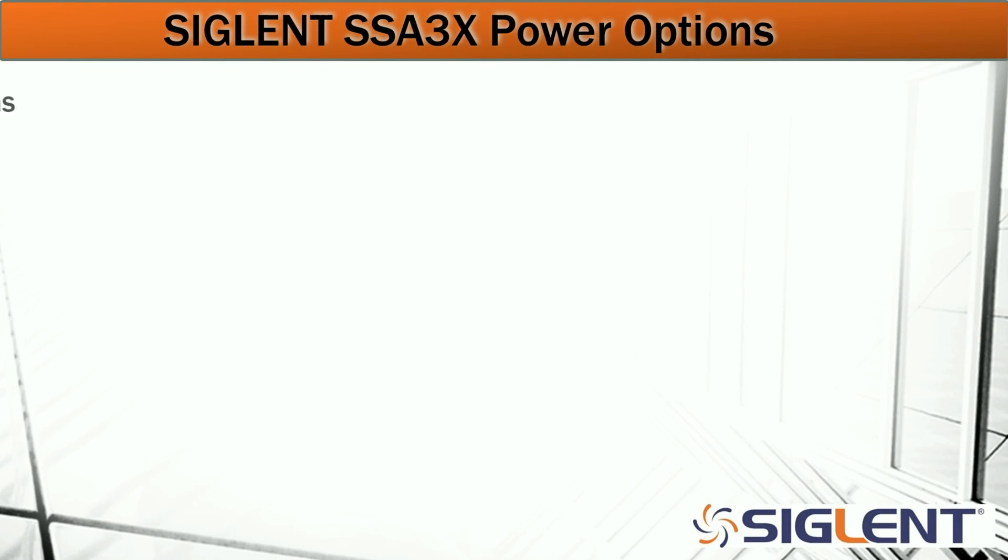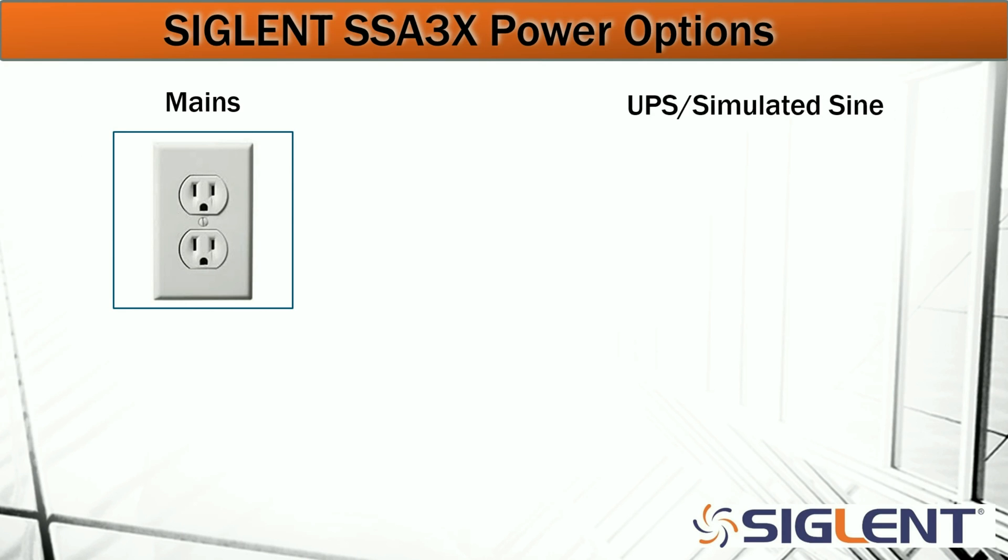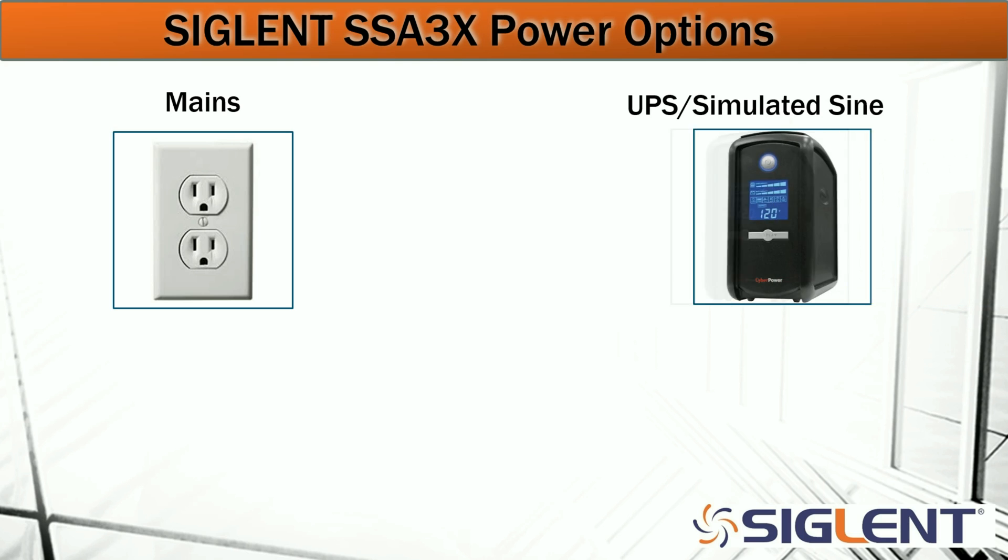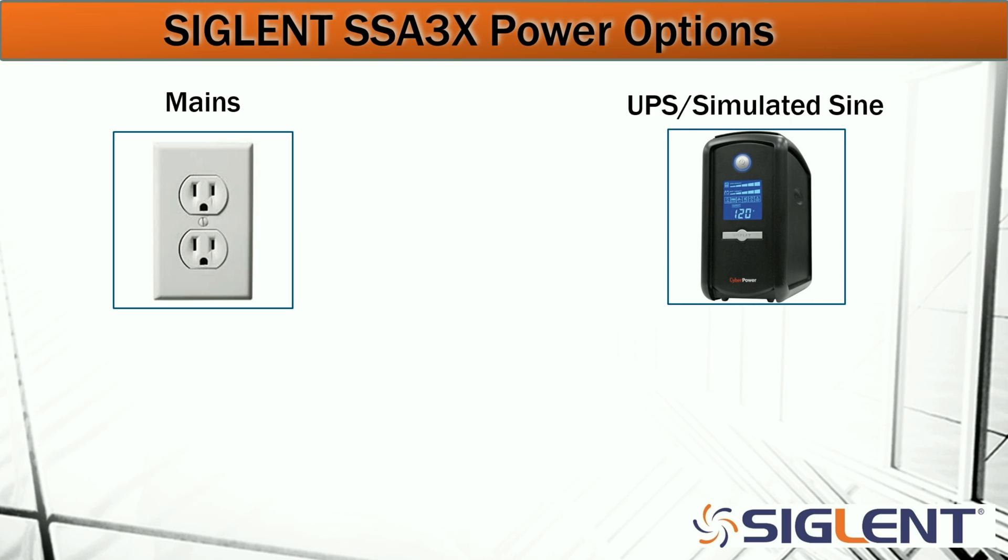So what kind of power options do we have? Mains, which is 60 Hz 120 volt peak-to-peak sine wave here in North America. We've got uninterruptible power supplies or UPSs with simulated sine wave outputs, and we also have for more rugged applications inverters which are generally attached to vehicles or other batteries for remote applications.